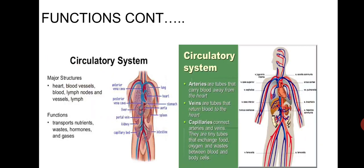The picture shows the circulatory system. Major structures of the circulatory system are the heart, blood vessels, blood, lymph nodes and vessels, and lymph. Their functions are to transport nutrients, waste products, hormones, and gases.